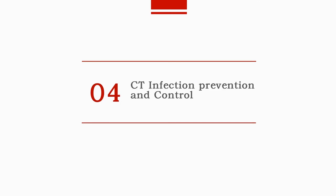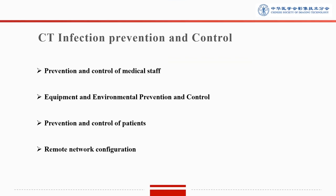In the last part, we will talk about CT infection prevention and control. For CT infection prevention and control, we consider the following areas: first, for medical staff; second, for equipment and the environment; third, for patients; and finally, remote network configuration also plays an important role in infection prevention and control.